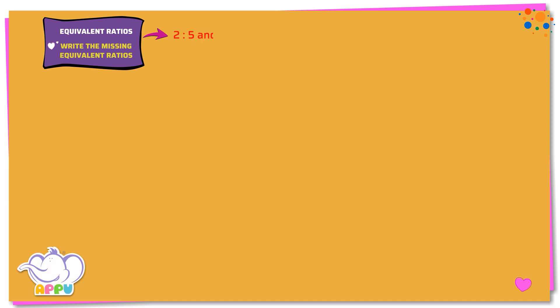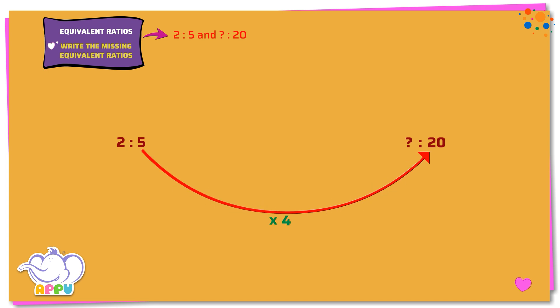Write the missing equivalent ratio. 2 is to 5 and what is to 20? We have 2 is to 5 and a missing number is to 20. We see that when we multiply 5 and 4, we get 20. So we multiply 2 with 4. We get 8. The missing number is 8.